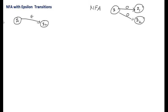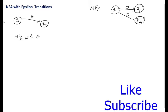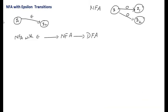One use of NFA with Epsilon transitions is that sometimes it is not possible to design an NFA or DFA directly. In that case, an NFA with Epsilon transitions can be designed first, then converted to an NFA, and then that NFA can be converted to a DFA. Designing this type of NFA with Epsilon transitions is very easy, but it is not more powerful than a standard NFA or DFA.